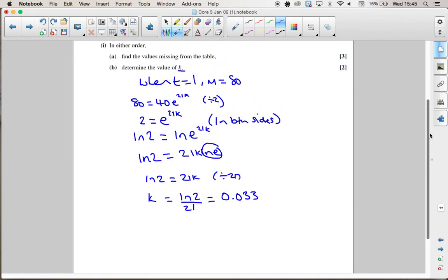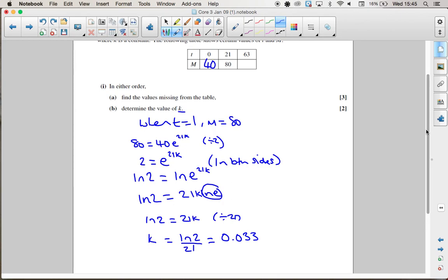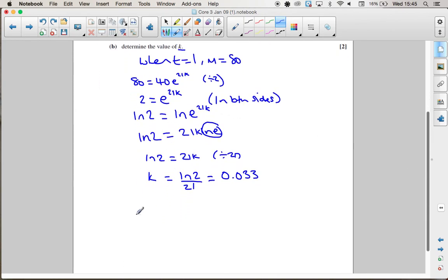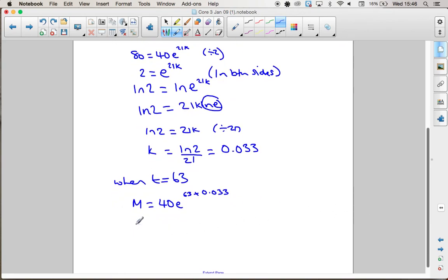I also need to work out this missing value here when t equals 63. So now I can use my equation again. m is going to equal 40e to the kt, which is going to be 63 for t, times k, which is our 0.033. And if you work that out on your calculator, you should get 320.